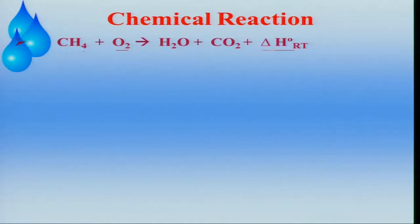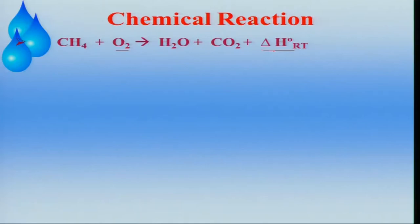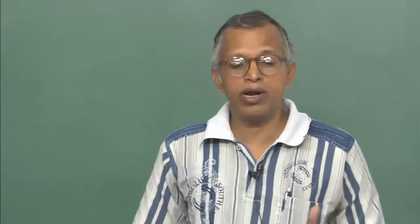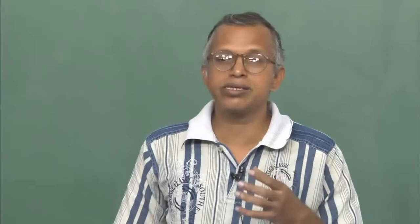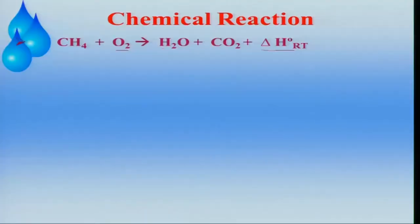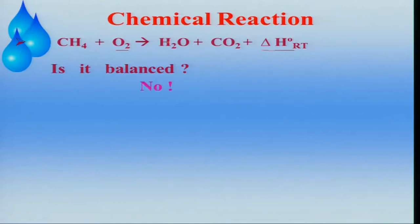If you look at this reaction, is it balanced? Balance means that in the left-hand side — methane reacting with oxygen — I need to look at whether the elements, for example carbon and hydrogen in methane, are the same as what is present in the right-hand side in carbon dioxide and water. In this case, it is clearly not balanced, and to balance it you will have to take the elements and balance them.